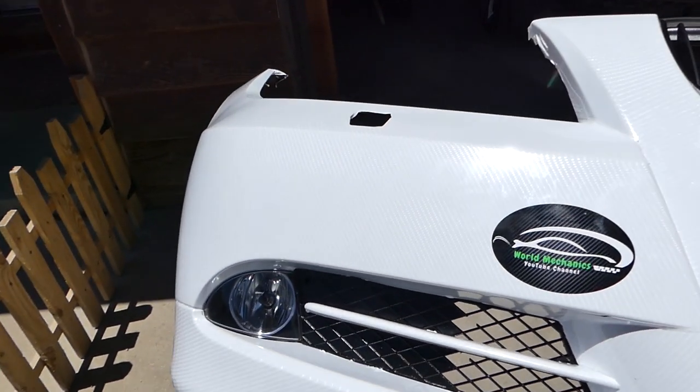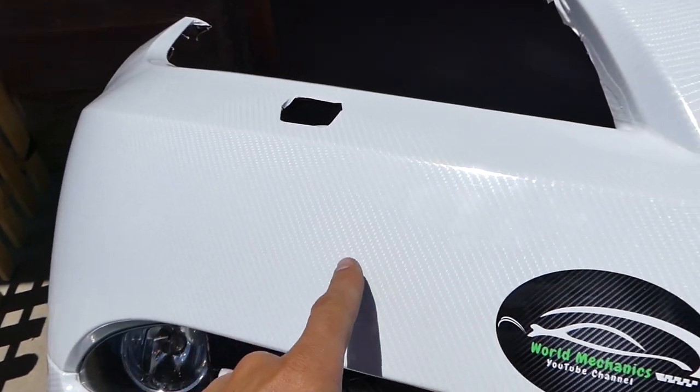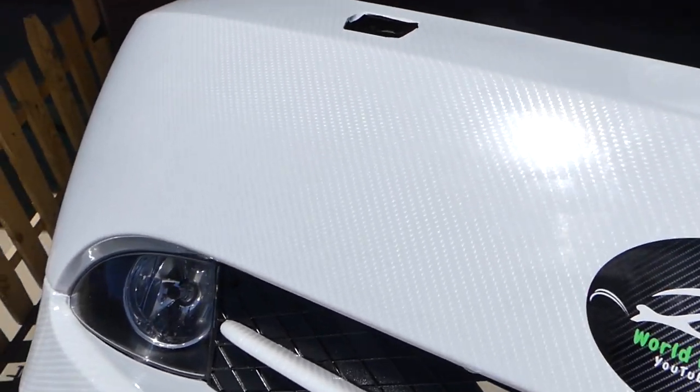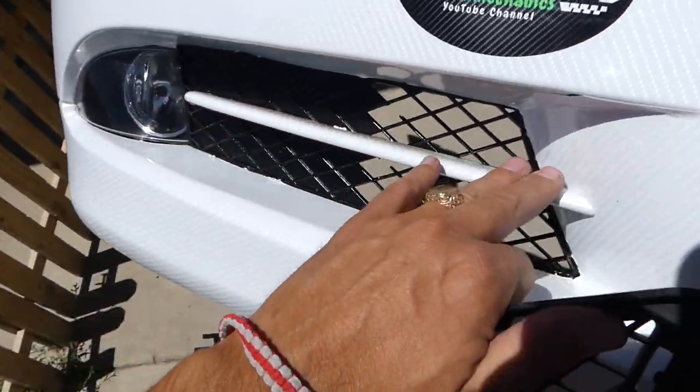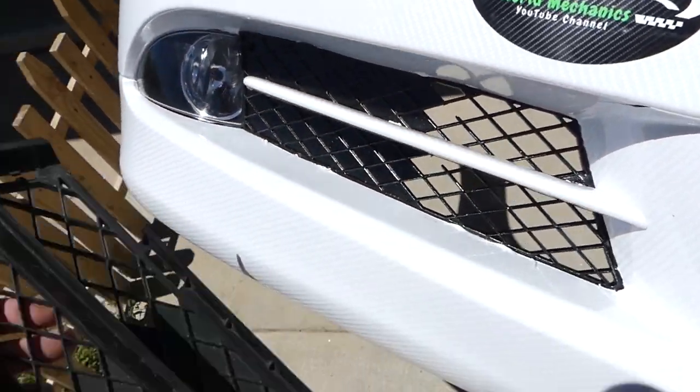We wrapped the whole bumper in white 7D carbon fiber. It looks really good in the sunshine with a glossy look, and we're going to wrap those things as well.